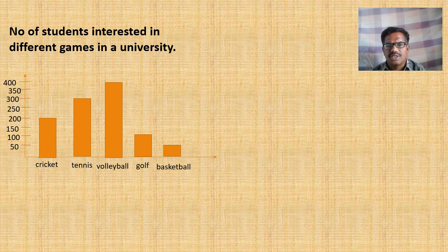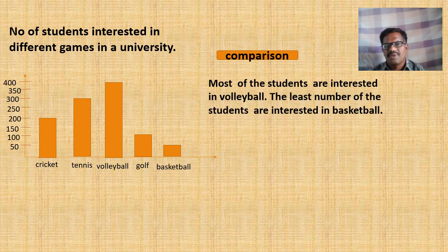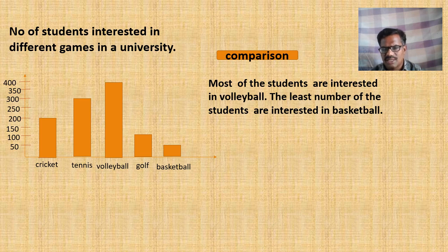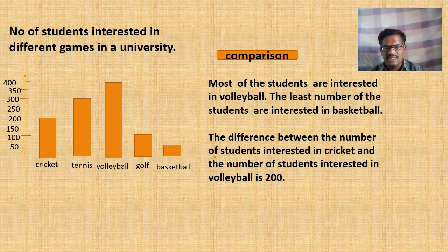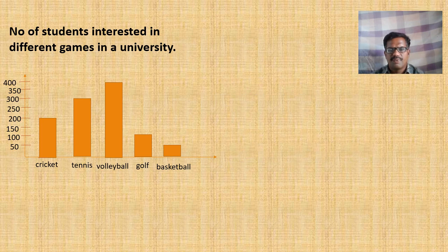We can make the students write one more paragraph about the description by taking comparisons among values — taking the least and the highest value. They may write like this: 'Most of the students are interested in volleyball. The least number of students are interested in basketball.' And then by taking the differences among the values they can write: 'The difference between the number of students interested in cricket and the number of students interested in volleyball is 200.' Taking many differences, they can write many sentences.